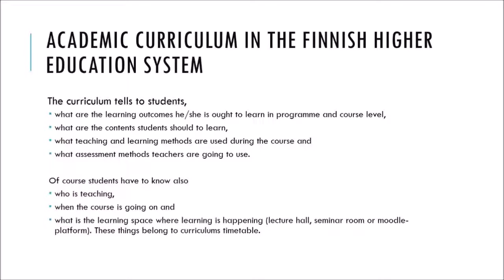In the Finnish higher education system, curriculum is made traditionally for the students. For them, curriculum is like a map in a strange territory. The curriculum map tells the student what the learning outcomes are they ought to learn at program and course level, what contents students should learn, what teaching and learning methods are used during the course, and what assessment methods teachers are going to use. Students also need to know who is teaching, when the course is going on, and what is the learning space — whether it is a lecture hall, seminar room, or Moodle platform, for example.